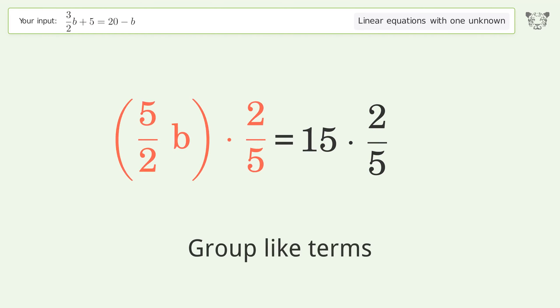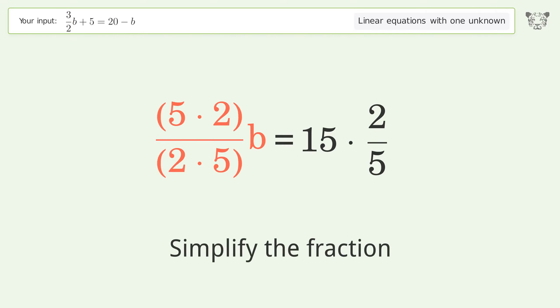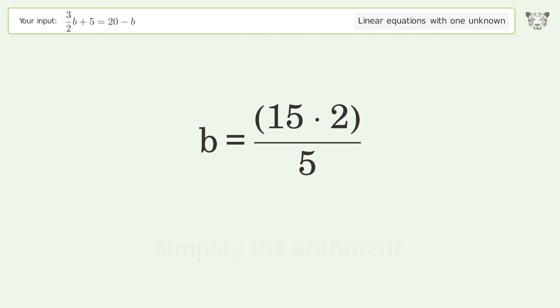Group like terms. Multiply the coefficients. Simplify the fractions. Multiply the fractions. Simplify the arithmetic. And so the final result is b equals 6.